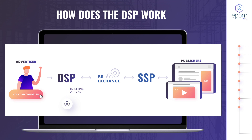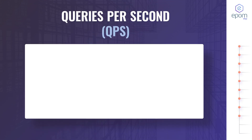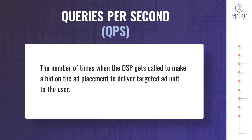Ready to buy this impression, the DSP starts bidding. The advertiser with the relevant targeting and the highest bid wins the impression. Even though the process seems very complicated, it lasts no longer than a few milliseconds in real life. One of the most important metrics in DSP advertising is queries per second, or QPS. The number of QPS reflects how many times a DSP gets called to make a bid on an ad placement to reach a user. Higher QPS represents the speed and frequency of analyzing and acting on those requests. After making a bid, the DSP understands whether the price was accepted. If not, it may require a higher price to win future bids.